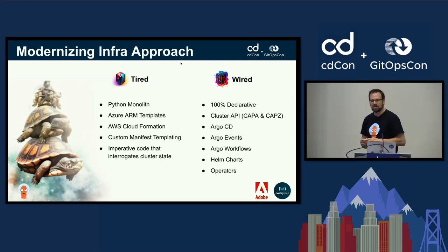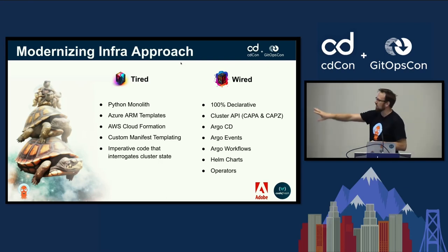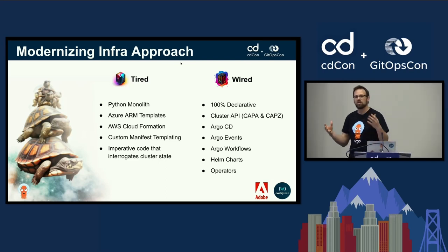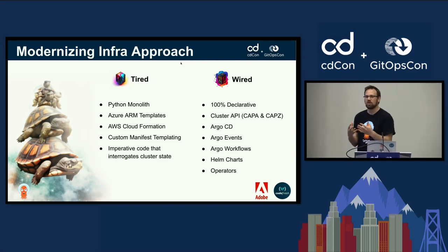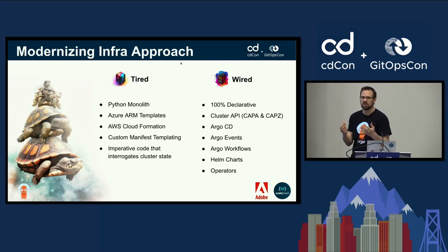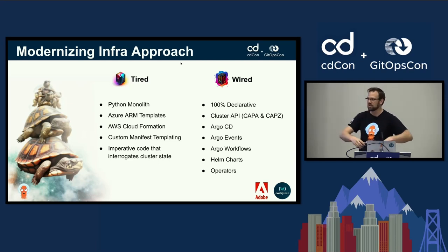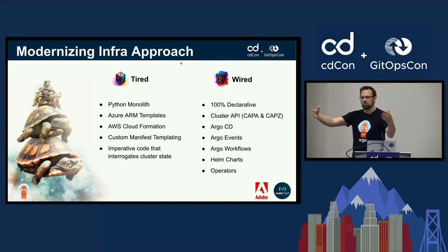I've got my AI-generated logo for Cluster API — it's a stack of turtles. If you're not familiar with Cluster API, it's basically a way you can provision clusters declaratively. You can create a custom resource inside of a Kubernetes cluster, and that custom resource is then responsible for spinning up a new Kubernetes cluster.